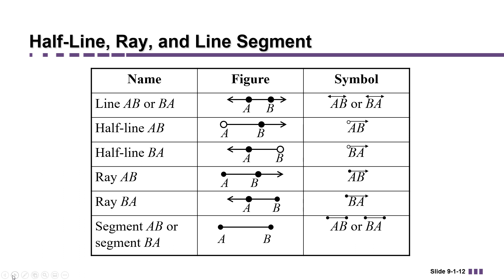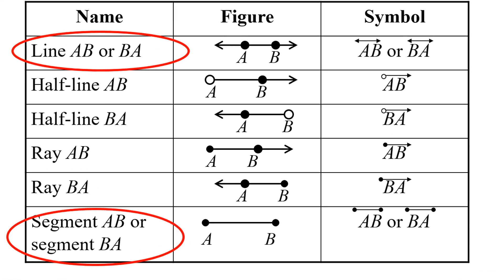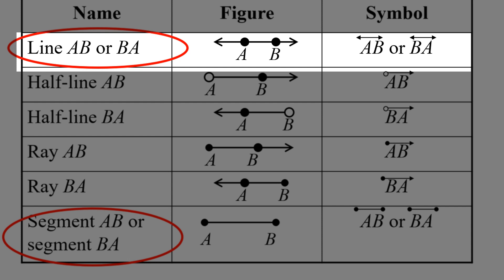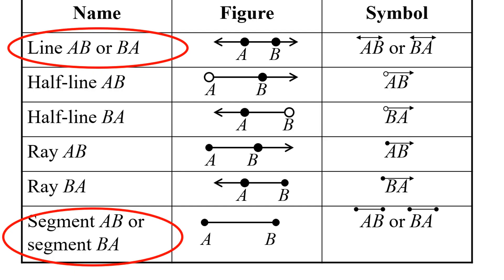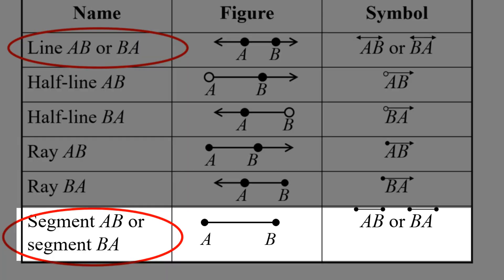In this list of lines, half lines, rays, and segments, you'll observe that in the case of lines and segments, the order in which we list the points doesn't matter. So, for example, with a line, if you have the line going through the two points AB, you could name it line AB or line BA. Either way, we're describing the entire line. Same thing with a segment.